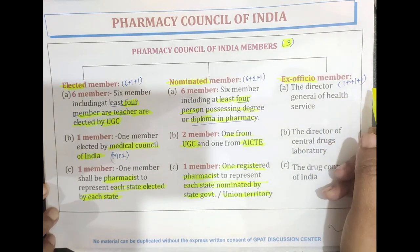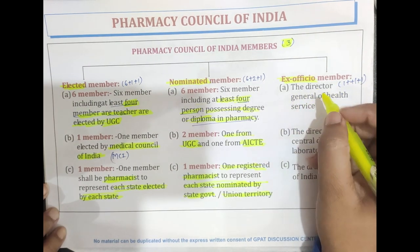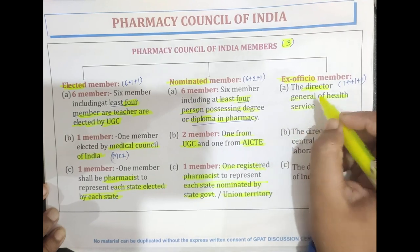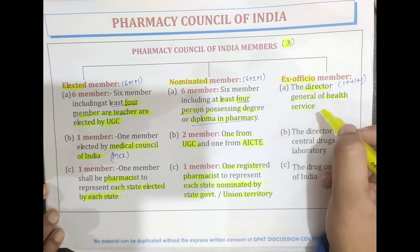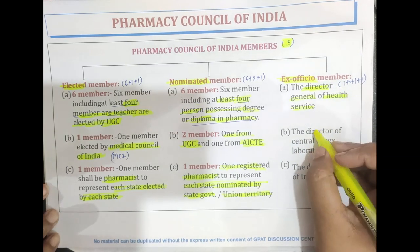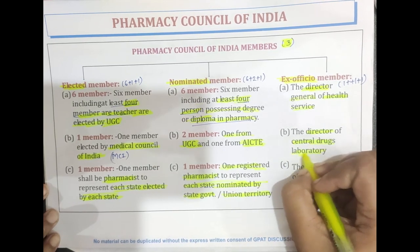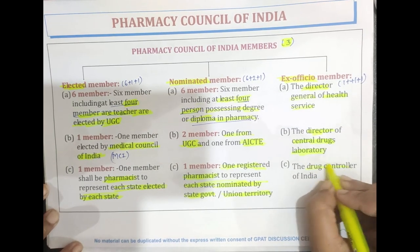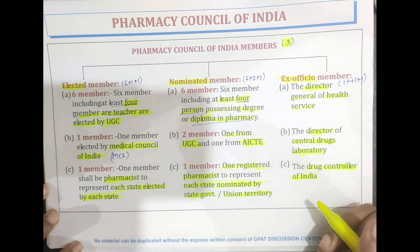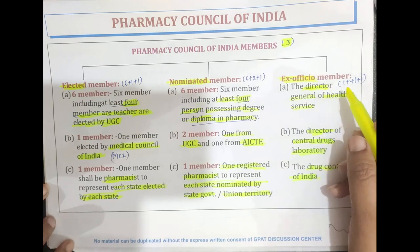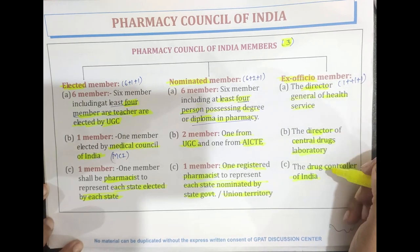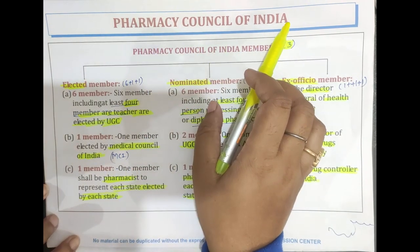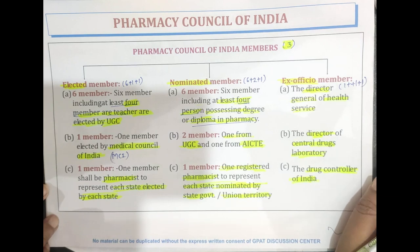The last type is the ex officio member — one plus one plus one. The first is the Director General of Health Services, the second is the Director of Central Drug Laboratory, and the last one is the Drug Controller of India. So these are all the important key points regarding the Pharmacy Council of India, that is PCI. Thank you for watching this video.